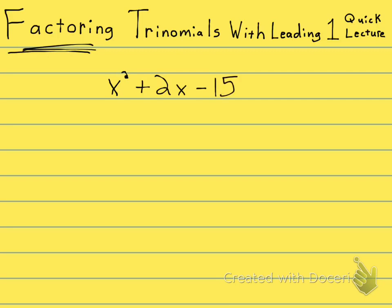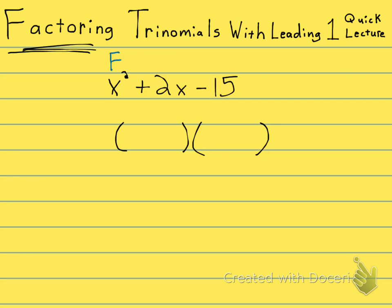When I factor this trinomial, it is going to be two binomials. I need to find out what four numbers to put in here. I know that the first two are going to give me the X squared — the first two always give you the X squared. So this one and this one will multiply to give me X squared. Two things that multiply to give you X squared is going to be X times X. Whenever you have a leading coefficient of 1, it's always going to be X times X.